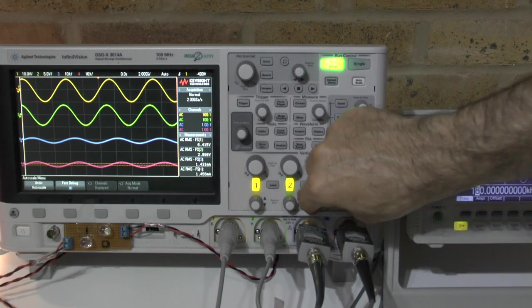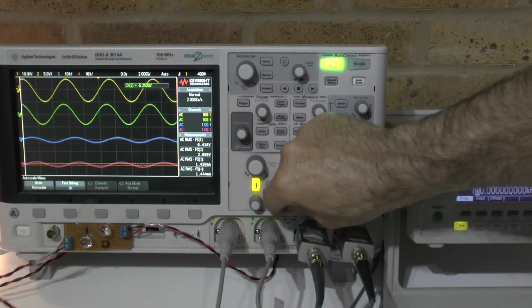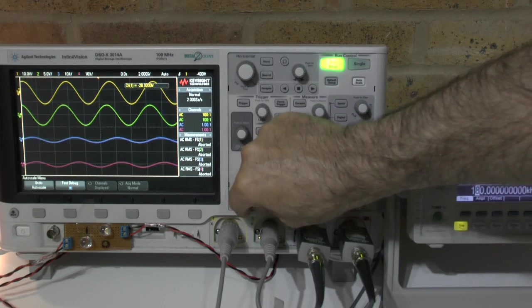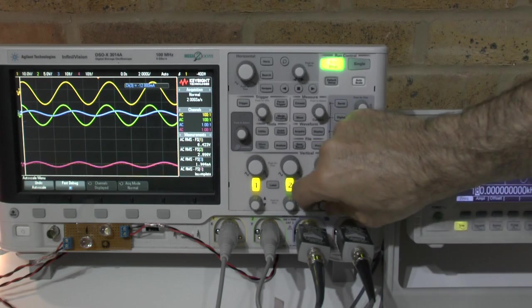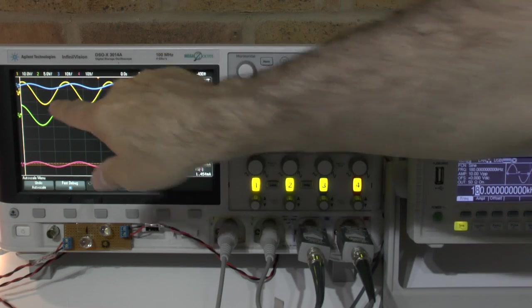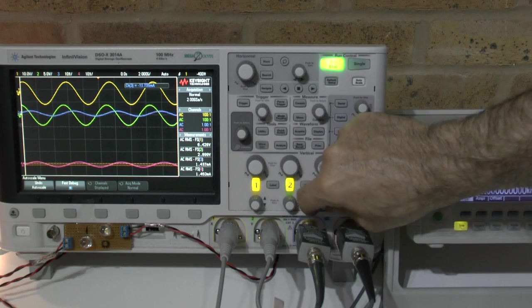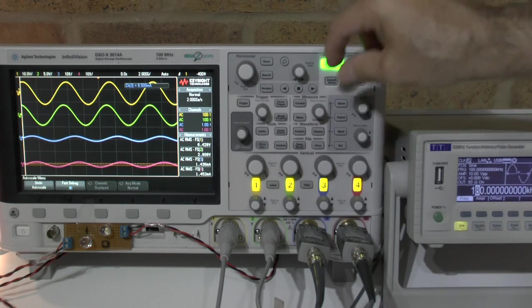What we can see right away here is that on source 1 and source 3 we have here a lagging current which is not good for power transition or transformation.